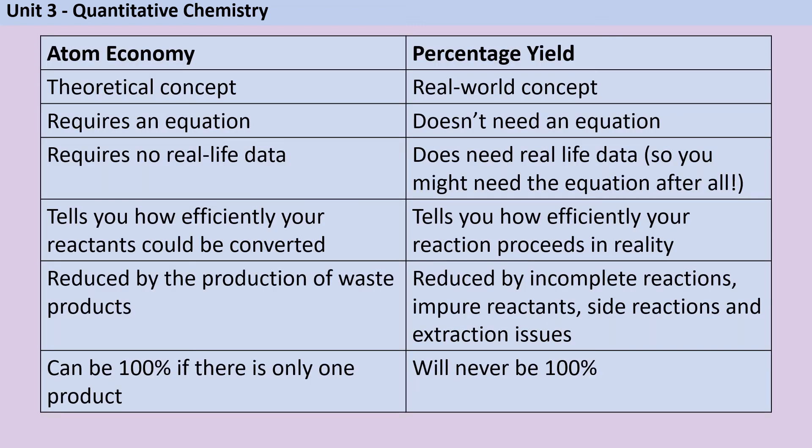So to summarise, atom economy is a theoretical concept and it requires an equation. It doesn't need any real life data, you're just going to look at the Mr's of the different substances in the equation and see how many of those atoms from the reactants actually ended up in the useful product. It tells you how efficiently your reactants could be converted, and it will be reduced by the production of waste products, but it could be 100% if your reaction only makes one product.